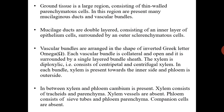Each vascular bundle is collateral and open, surrounded by a single-layered bundle sheath. The xylem is diploxylicis — it consists of both centripetal and centrifugal xylem. In each bundle, xylem is present towards the inner side and phloem towards the outer side. Between xylem and phloem, cambium is present.